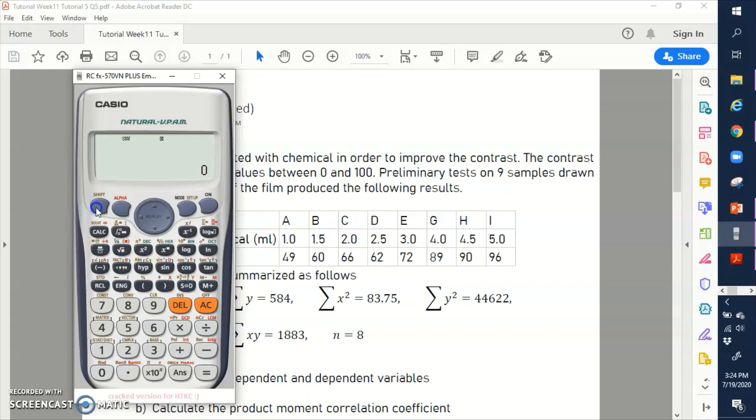And then you go to shift and what was it again? 1. Yep, shift 1 and you have these options. You can retrieve any information that you need from your calculator. So in order for you to calculate R, which is your correlation coefficient, you're gonna need to retrieve the information on the summation, right? Sum of x, sum of y, sum of x squared and all that. So you can get that from number 3 here. So I'm gonna click on number 3. There you go.